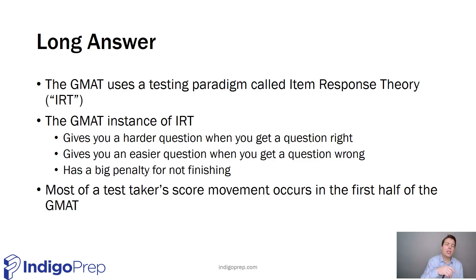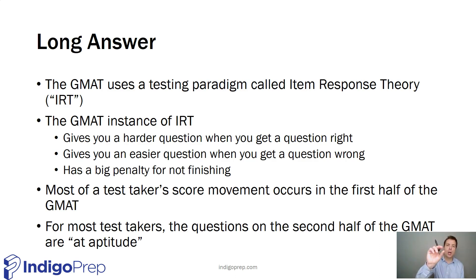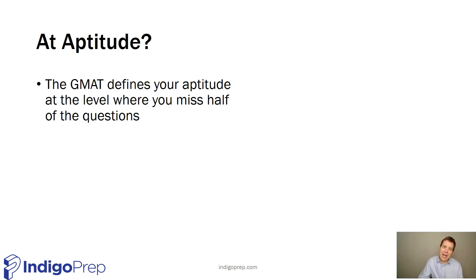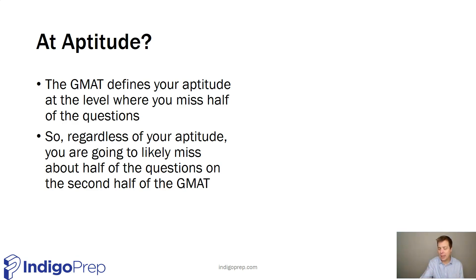It's true for the GMAT specifically, and for IRT overall, that most of your score movement takes place in the first half of the test. For most test takers, the second half of the test is at your aptitude. You start at a 50th percentile, and it takes about half the test to find your level. From that point on — about halfway through — you're getting half the questions right and half the questions wrong. The GMAT defines your aptitude as the level where you're getting half the questions wrong, or half the questions right. So no matter who you are — a 300 or an 800 test taker — the last half of the test is usually getting half the questions wrong. That's just how the IRT algorithm for the GMAT works.